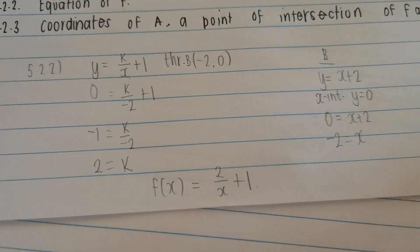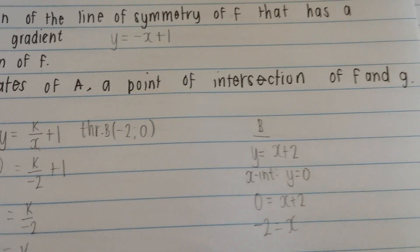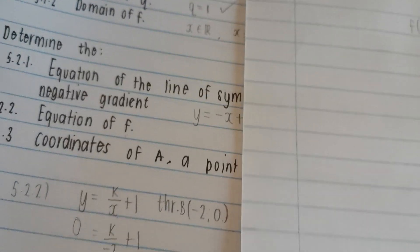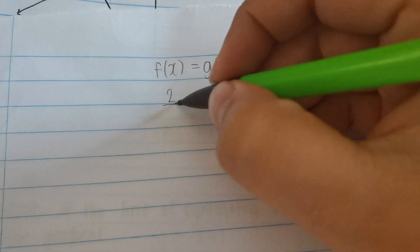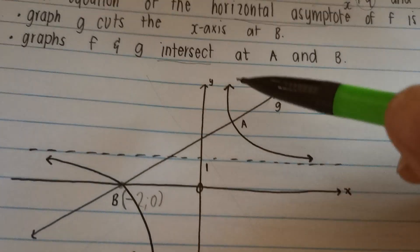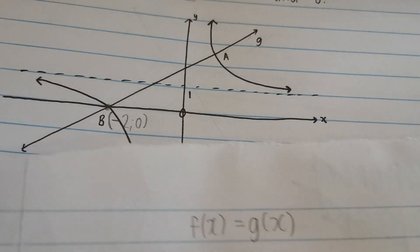The last question says calculate the coordinates of a, a point of intersection of f and g. What we're going to do for that is we're going to say f of x must equal to g of x. What is the equation of f of x? We figured it out. It's 2 over x plus 1. So let's write this down. 2 over x plus 1. And it must equal to, because at that point a, they are equal to each other. And b. Equal to. Here's the equation. x plus 2.